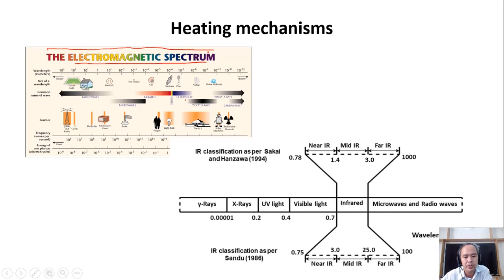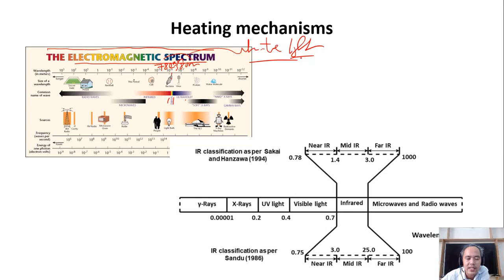Our eyes can see exactly a small range of radiation — from 380 nanometers to 780 nanometers. This is the range of radiation we can see with our naked eyes, and when we combine all of this together, we call it white light, from the sun for example.